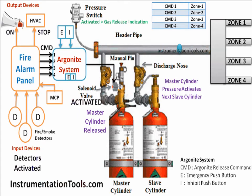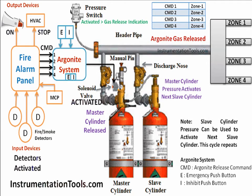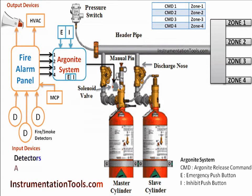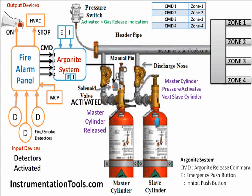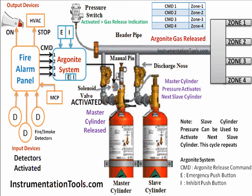In the animation, only one slave cylinder operation is shown. Using this concept, we can release many cylinders connected in series by activating one master cylinder. Since we have four zones, we release gas only to the fire-affected zone. On/off valves are provided in the zone 1, zone 2, zone 3, and zone 4 discharge pipelines. Whenever a command is received from the fire alarm panel, the respective zone valve opens immediately while remaining valves stay closed. Generally, more than one master cylinder is used either to speed up the operation or to divide cylinders among specific zones.